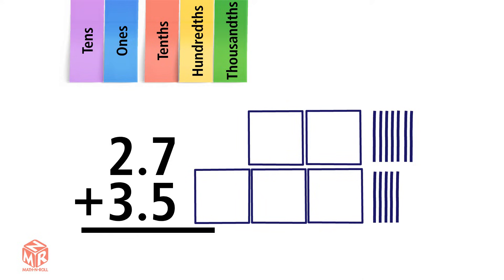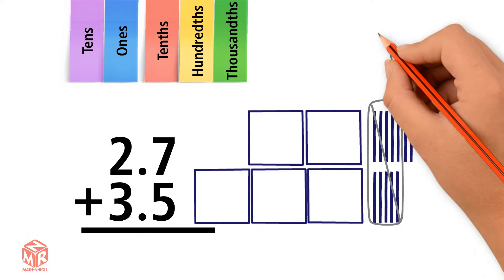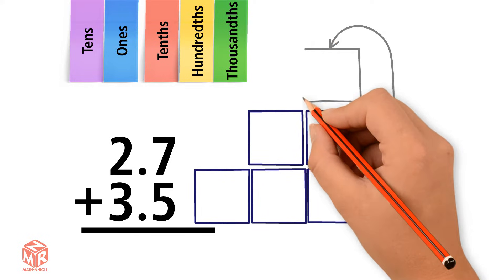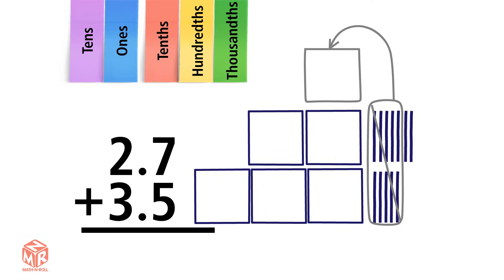We start adding from right to left, so we start with the tenths. 7 plus 5 equals 12. 12 is more than 9, so we have to regroup. We regroup ten tenths to make one one. We write the one on top of the ones column. We're left with two tenths, so we put that in the tenths column.